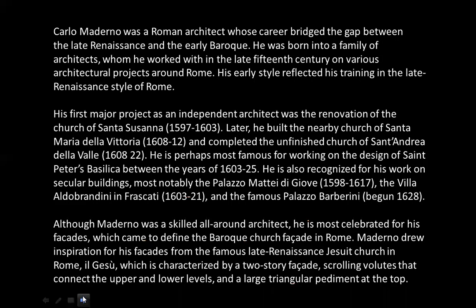Carlo Maderno was a Roman architect whose career bridged the gap between the late Renaissance and the early Baroque. He was born into a family of architects whom he worked with in the late 15th century on various architectural projects around Rome. His early style reflected his training in the late Renaissance style of Rome. His first major project as an independent architect was the renovation of the Church of Santa Susana. Later he built the nearby Church of Santa Maria della Vittoria and completed the unfinished Church of Sant'Andrea della Valle.